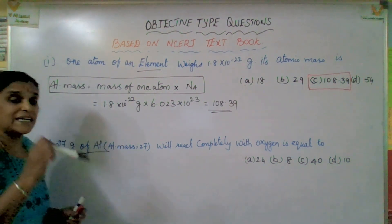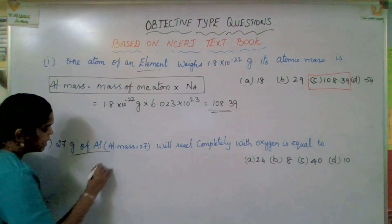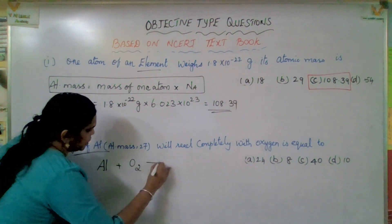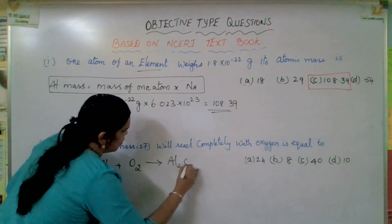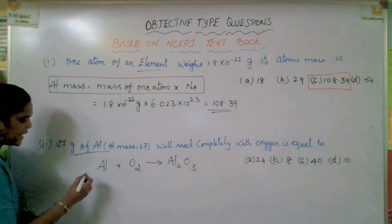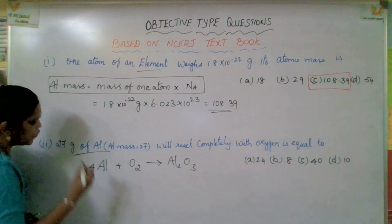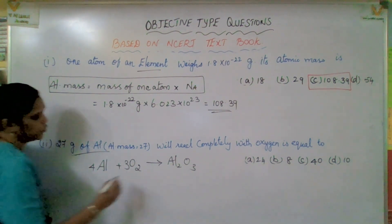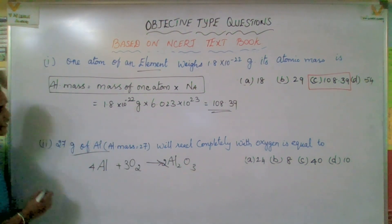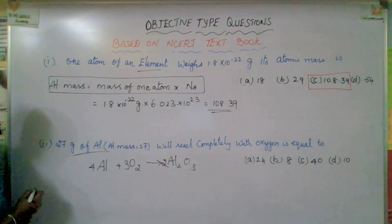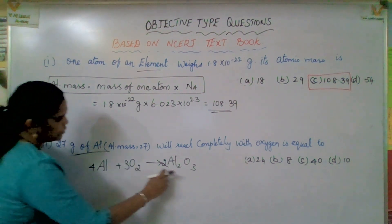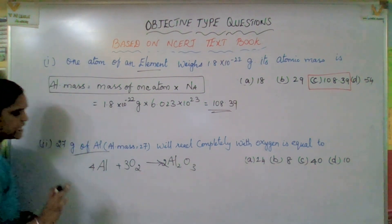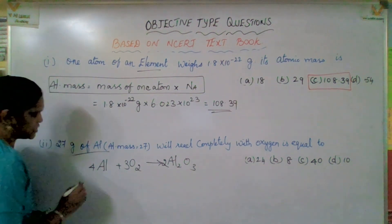First and foremost, let us write the equation. Aluminium plus oxygen gives aluminium oxide. Balancing that equation: 4Al plus 3O2 gives 2Al2O3. Here, 2 twos are 4; 3 twos are 6; 2 threes are 6. Yes, it is balanced.